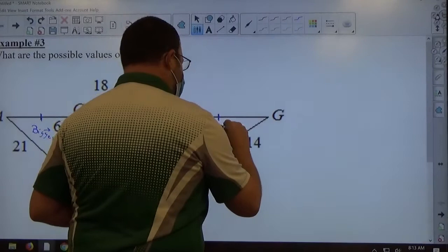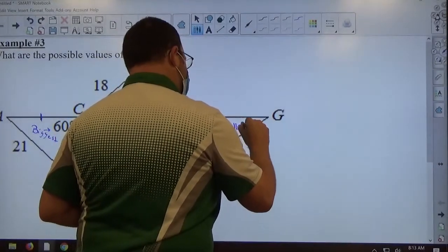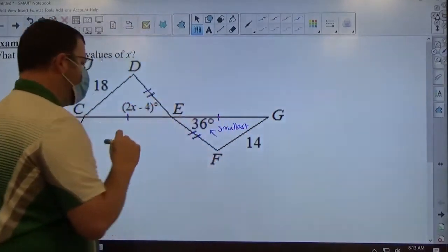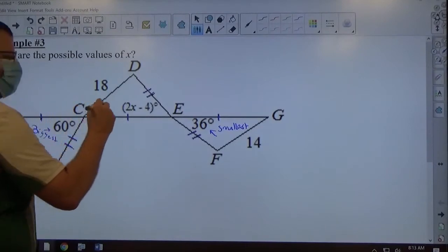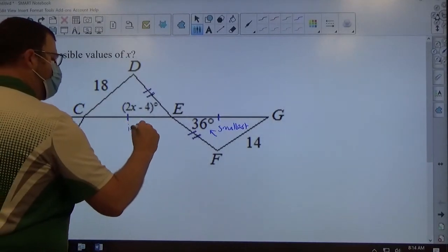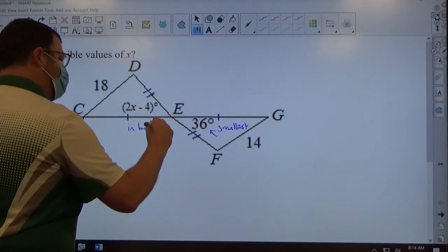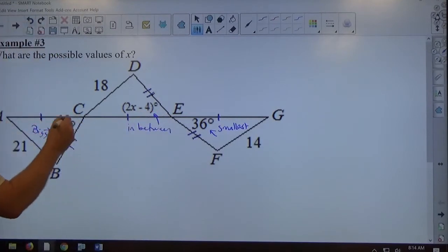This would have to be the smallest angle, 36, which puts 2x minus 4 in between, in between these two angle measures.